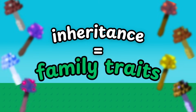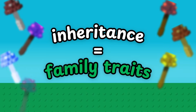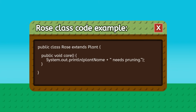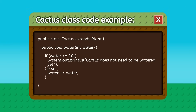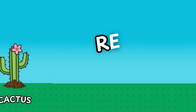And here's where it gets really smart: inheritance. This means one class can take on the features of another class, just like kids inherit traits from their parents. A tomato is a plant but it also needs extra sunlight. A rose is a plant but it also needs pruning. A cactus is a plant but it barely needs water. They all share the basics from the plant class, but each adds its own twist. That way, you don't rewrite everything — you just reuse and customize.